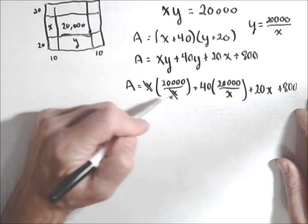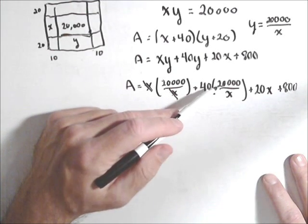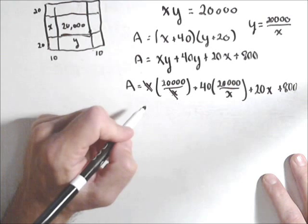Those x's will cancel, so we can go ahead and cancel those. And we're going to be able to do some multiplying there.